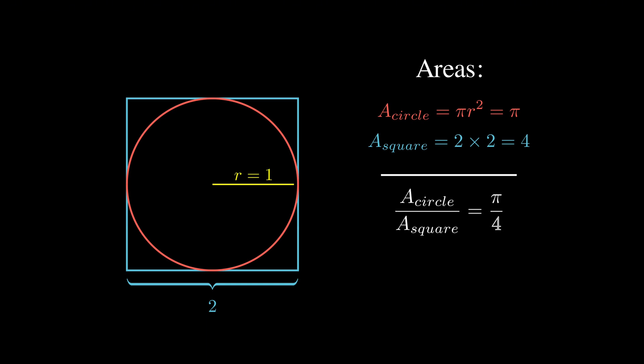The ratio of the circle's area to the square's area is pi divided by 4, and this ratio also tells us what fraction of randomly thrown darts should land inside the circle versus the total number thrown at the square. So we start throwing darts randomly at our board, and we keep track of two numbers: how many land inside the circle, and how many we've thrown total.